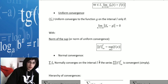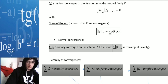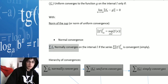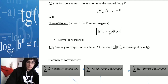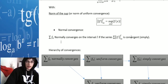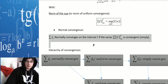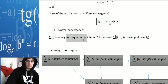Normal convergence: a sum of functions normally converges on the interval i if the series — the sum of the infinite norm of the sup of f — is convergent simply. That's the third one that we actually use, but it's hard to demonstrate.